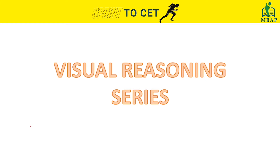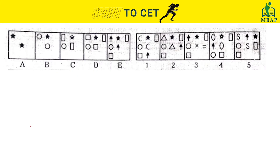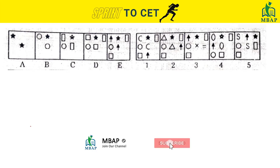We'll look at some questions covering the two types: series and analogies. We'll try to get one element right, and based on that, see how we can eliminate the other options and get the right answer.